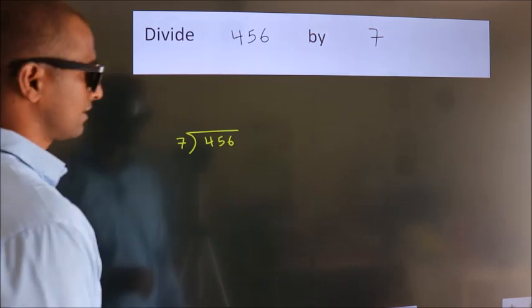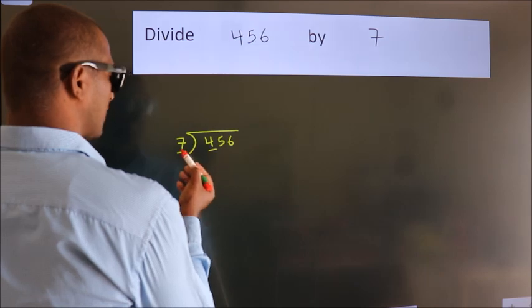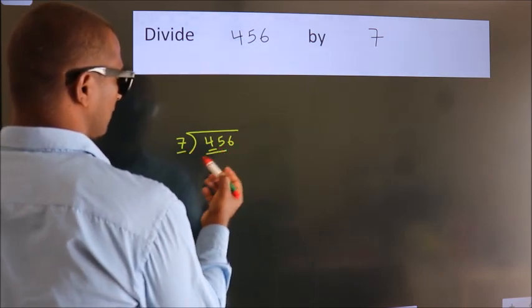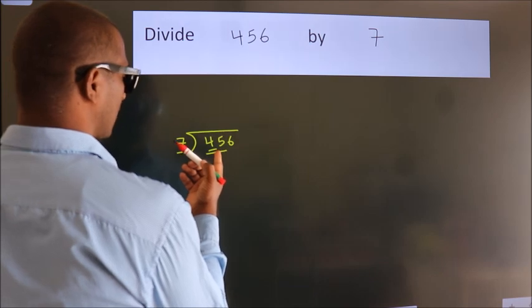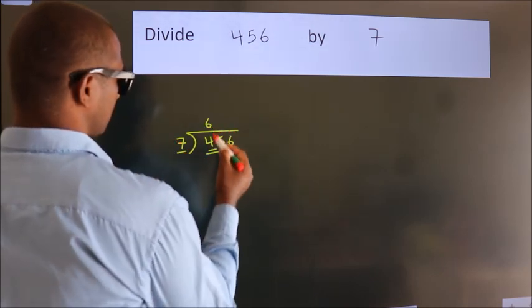Next. Here we have 4, here 7. 4 is smaller than 7, so we should take two numbers, 45. A number close to 45 in the 7 table is 7 times 6, which is 42.